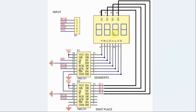To display a character on one of the digits of the module, we need to send two bytes. The first byte goes through the first shift register to draw the character on the digit, while the second byte goes through the second shift register to select one of the four digits. A second byte value of 8 selects the first digit, 4 selects the second, 2 selects the third, and 1 selects the fourth digit.